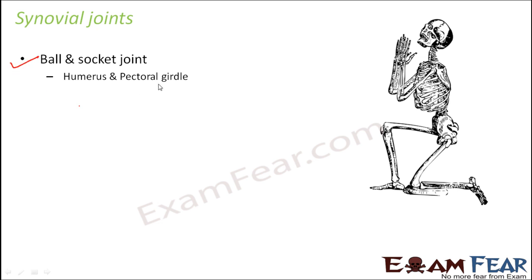Where do we have this ball and socket joint? It is present in the shoulder, where complete rotation is allowed due to the presence of the ball and socket joint. It is also present in the hip region — there also you have a ball and socket joint. We will learn how exactly it works.